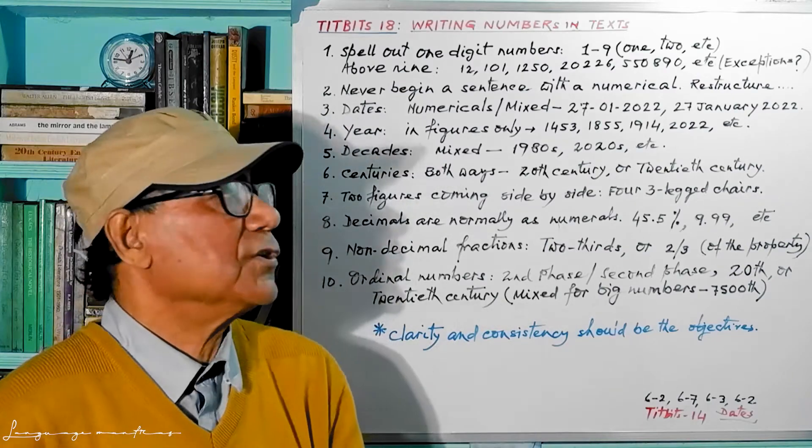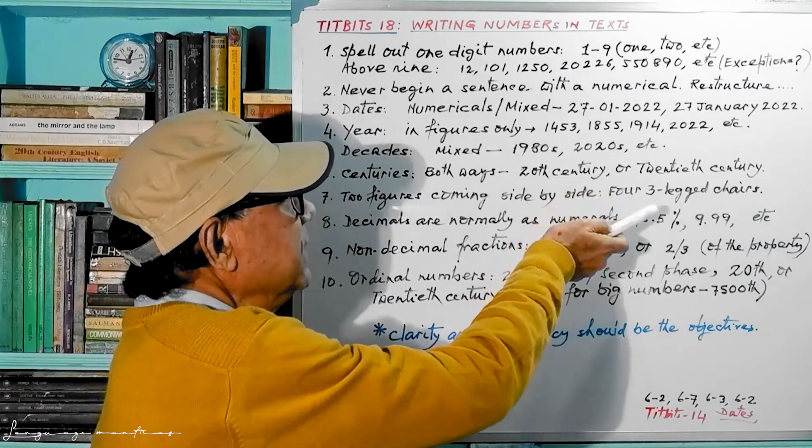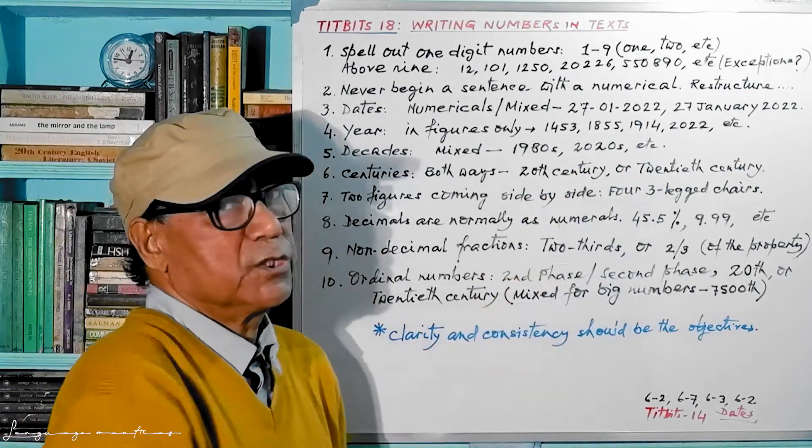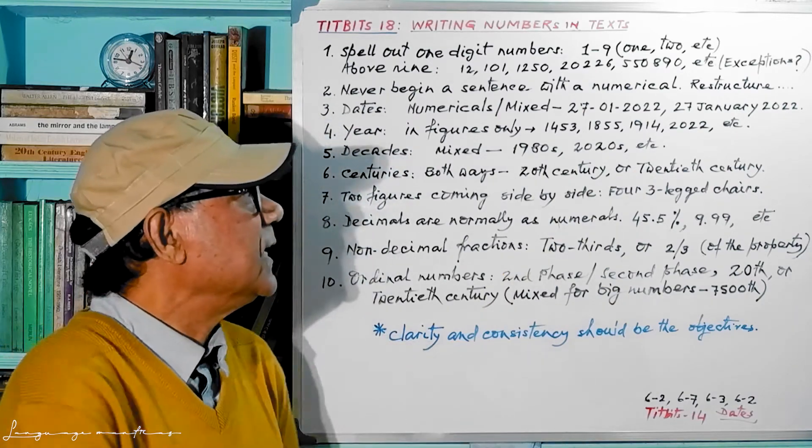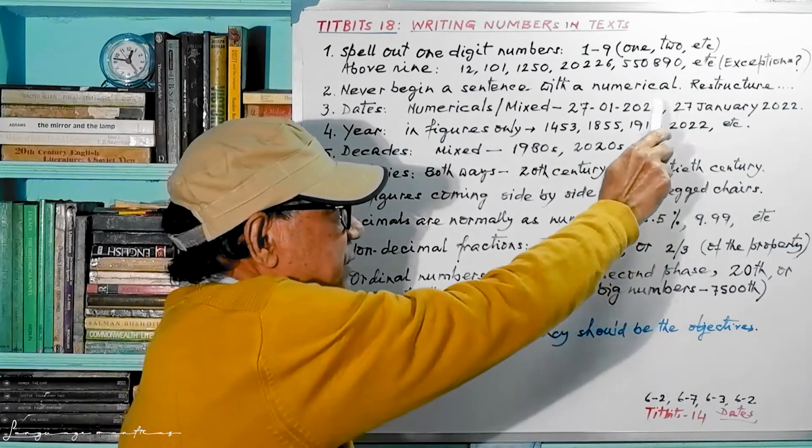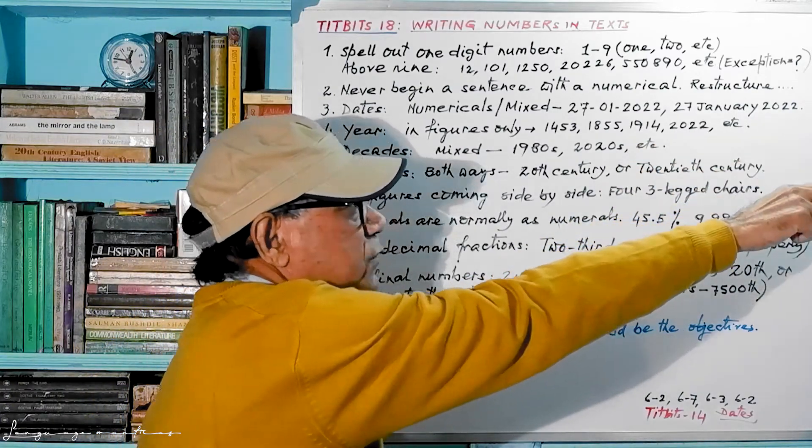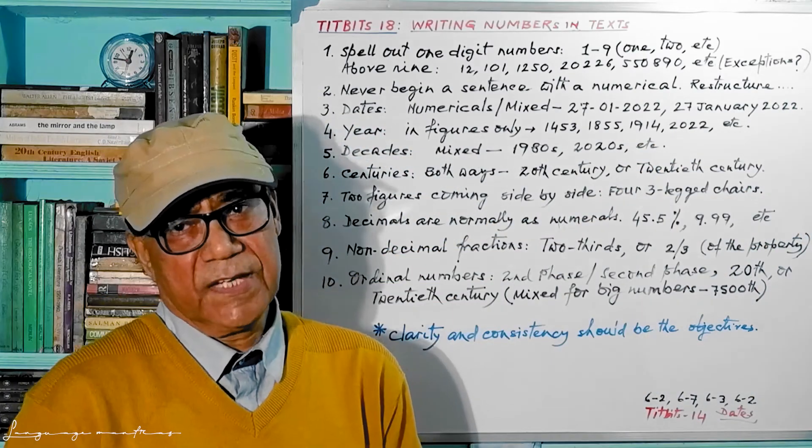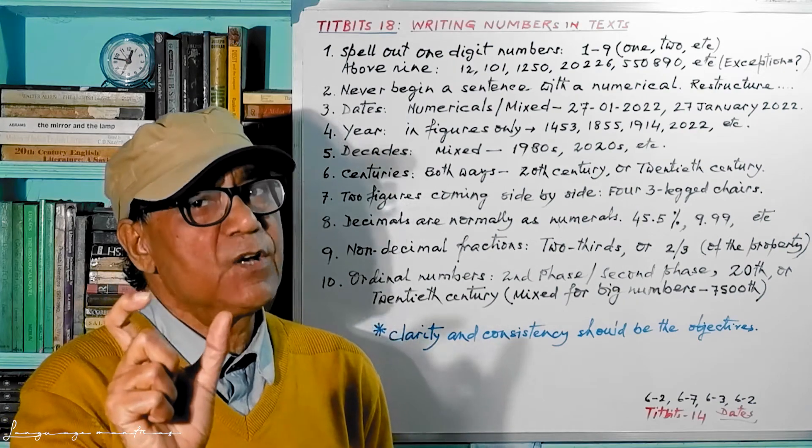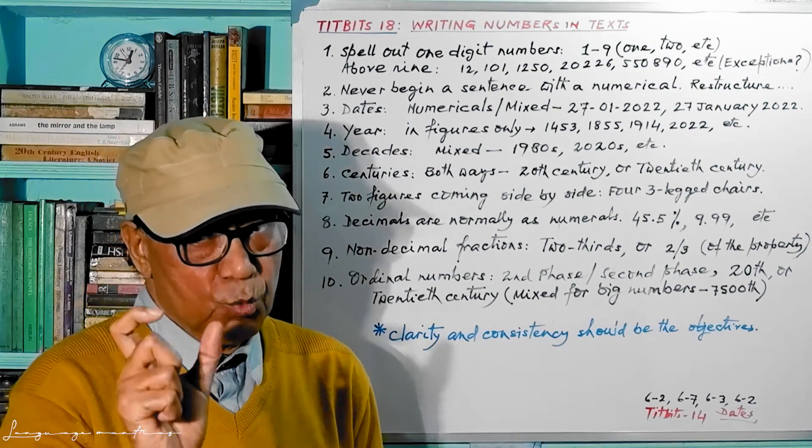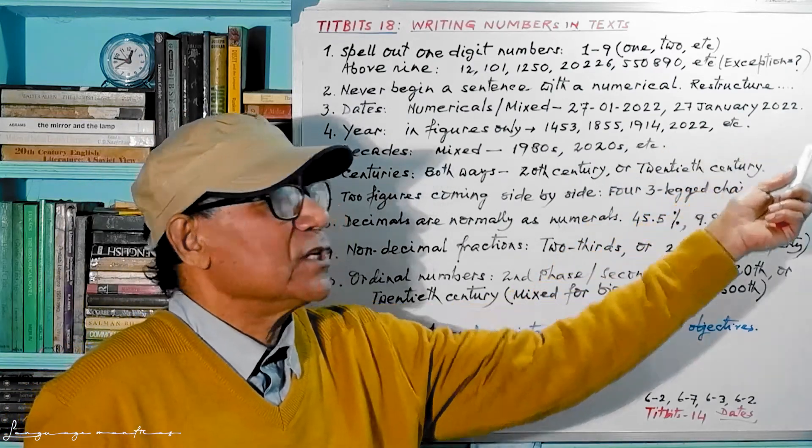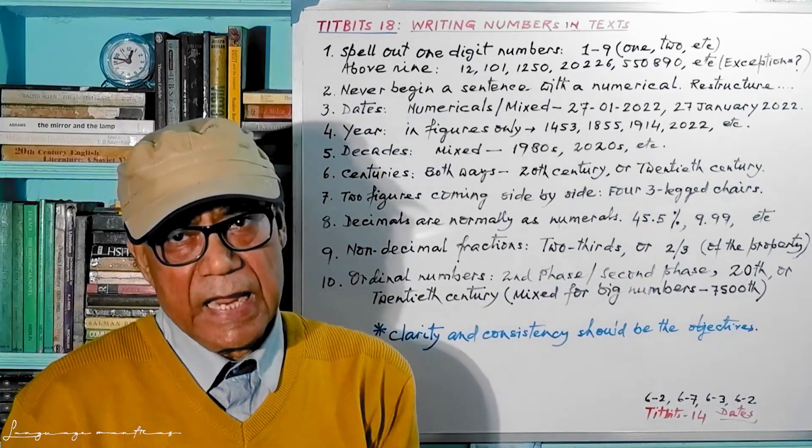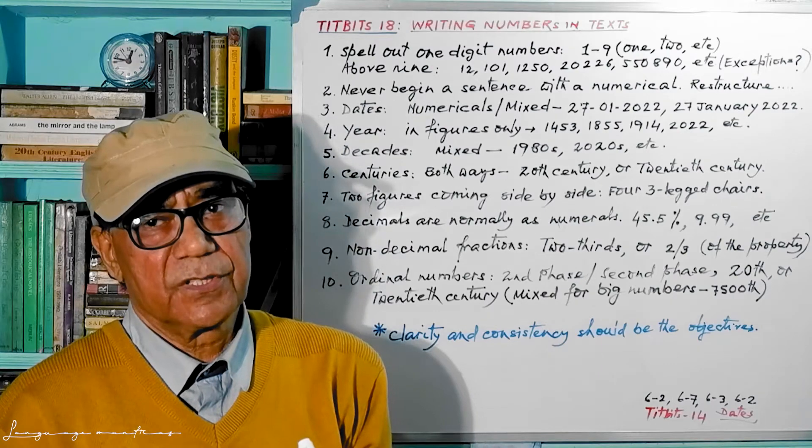One is 27-1-2022, all in figure, and another one is there: 27 January 2022. That January part is written in word, written as a word, and 27 and 2022 left as numerals. So these are the simplest way of writing dates.